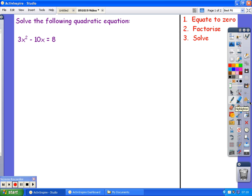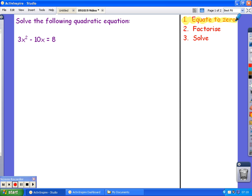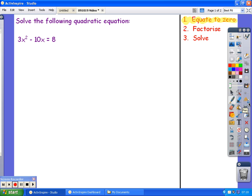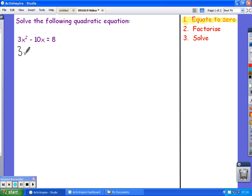So, what's the first thing that I need to do? Equate to 0. This equation is nice and easy to equate to 0. All I need to do is subtract 8 from both sides. So, here we go. First step done.